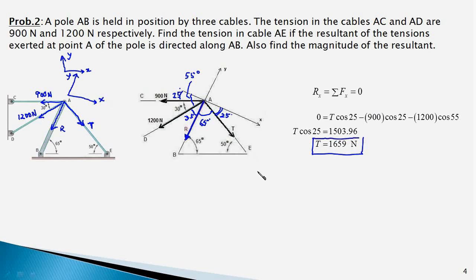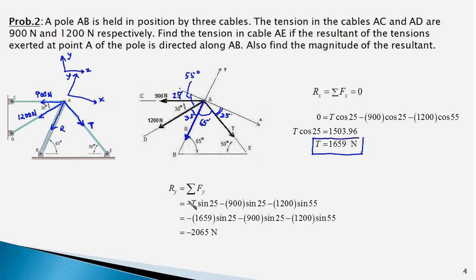Now let us do the summation of the Y components of forces and equate it to the Y component of R. Ry equals sigma Fy. The Y component of T is minus T sin 25. In fact, all three forces have negative Y components: minus 900 sin 25 and minus 1200 sin 55. This works out to minus 2065 Newtons, so the magnitude of R is 2065 Newtons.